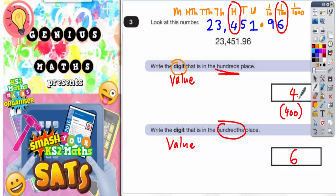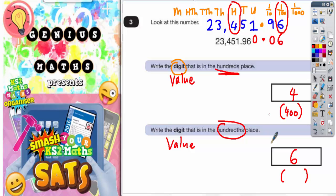So what we're saying is if it asked you for the value of that four, it would be worth 400. And the value of the six — if it did ask you that — well six in the hundredths column, you would have to replace it with zeros back up to the unit, so it would be 0.06. You would need a zero in the tenths column, a decimal point, and a zero in the units column. You don't have to put zeros in for everything else because if you've got zero in the units column we know it would be 0.06. So the value of the six is 0.06, which is another way of saying 6 hundredths.